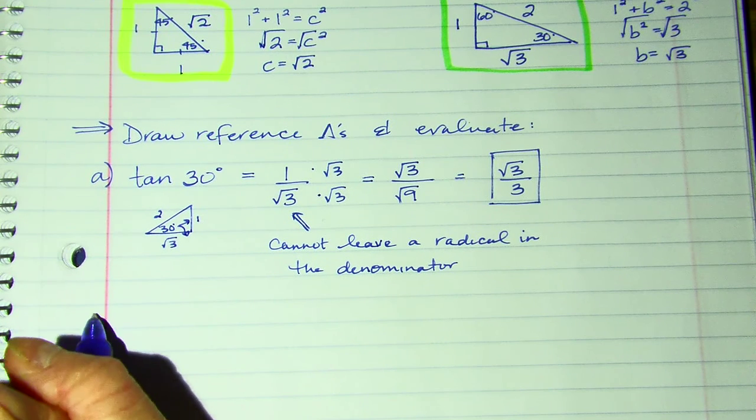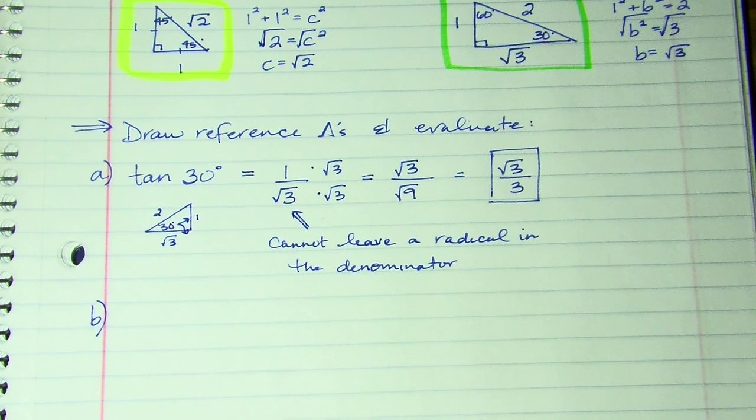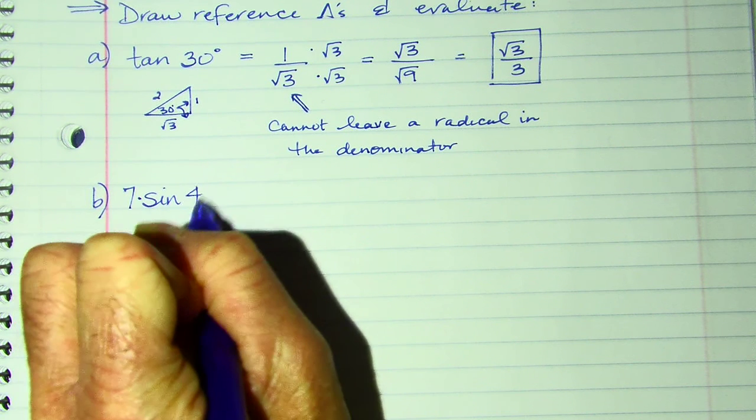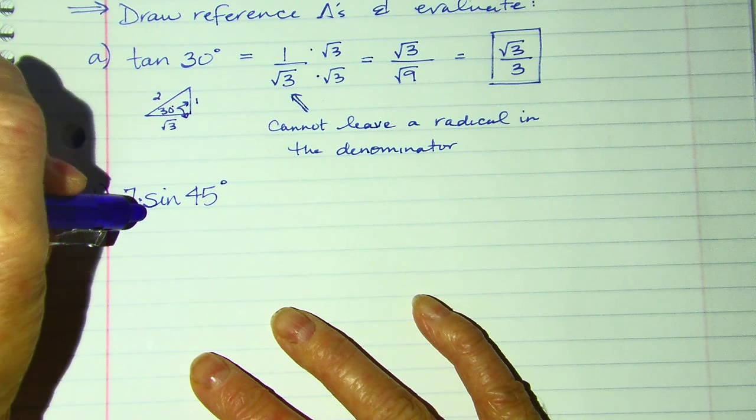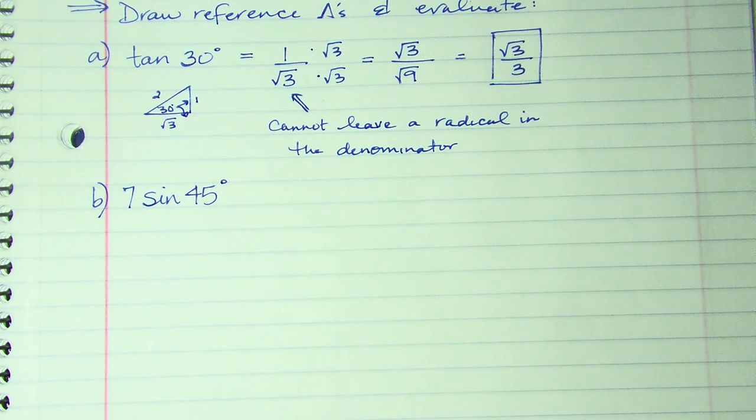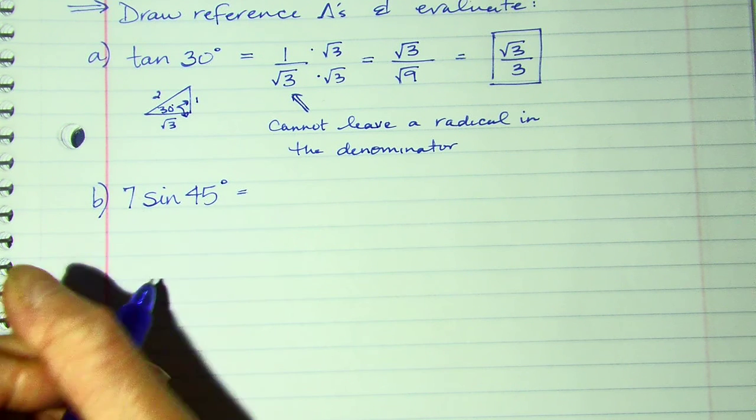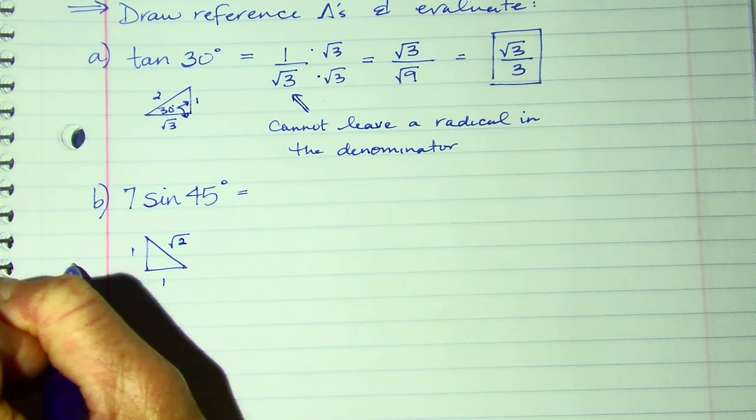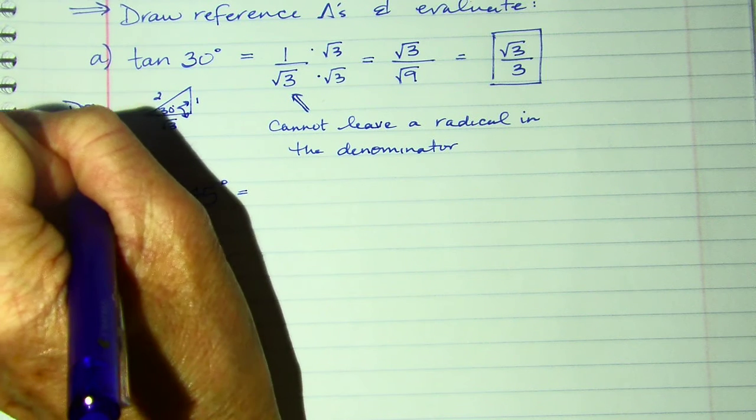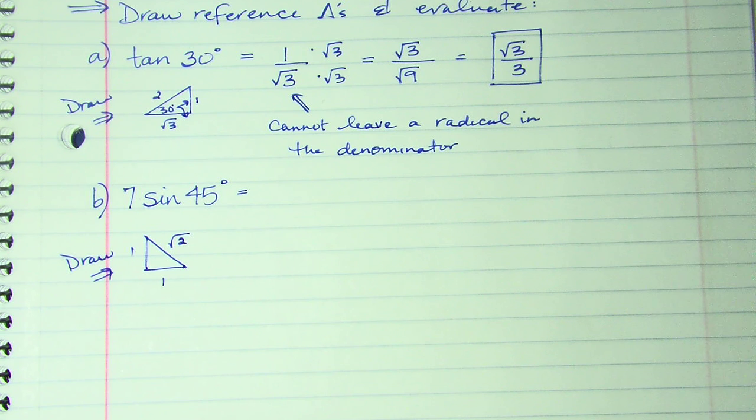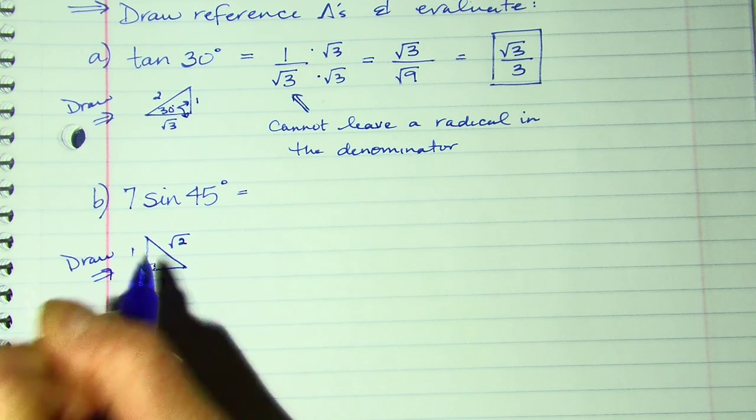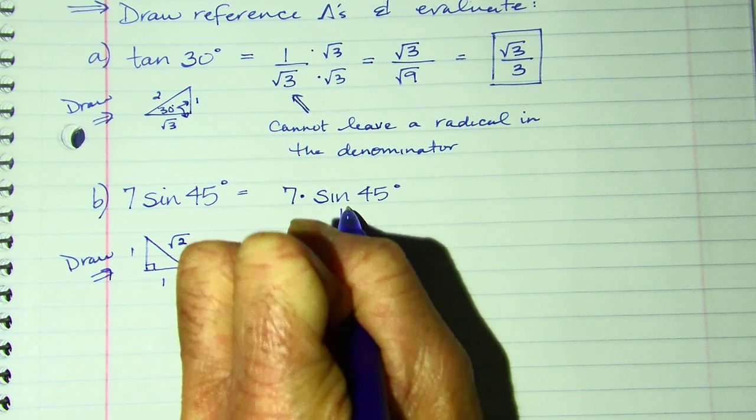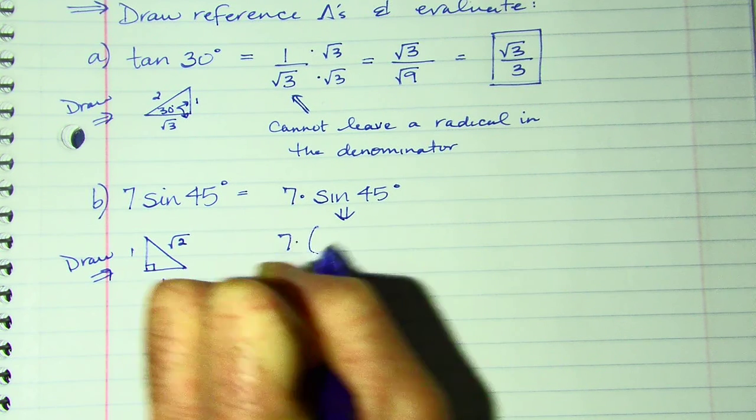So part B. Now, again, you can pause the video and try one on your own. We are going to find the value of 7 times sine of 45 degrees. Now, in your book, there won't be a multiplication symbol. It will just simply say 7 times the sine of 45. So when I see that 45 degrees, I draw my 1, 1, root 2 triangle. So in all of these, I draw my reference triangle. Or I draw it one time at the top of my homework or at the top of my test.